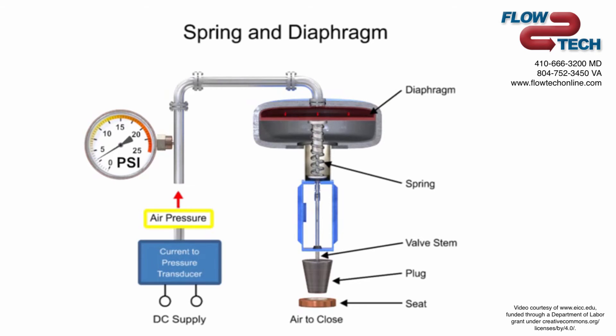For example, a pressure of 9 PSI applied to the diaphragm moves the spring and valve stem to 50% of operating range.